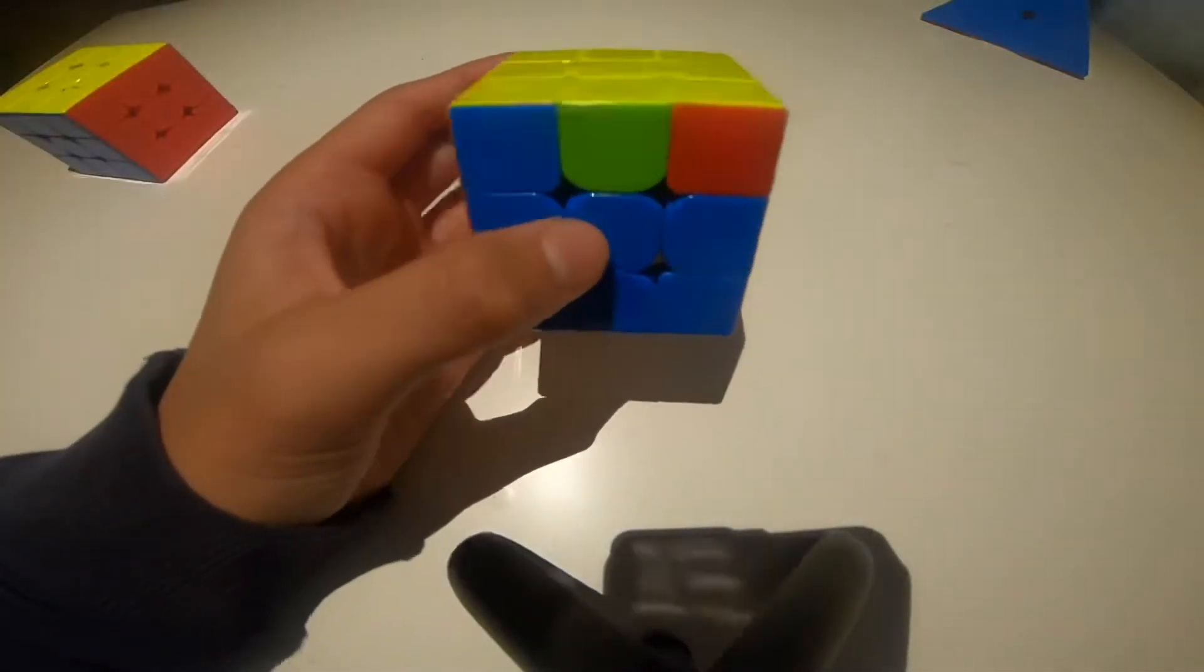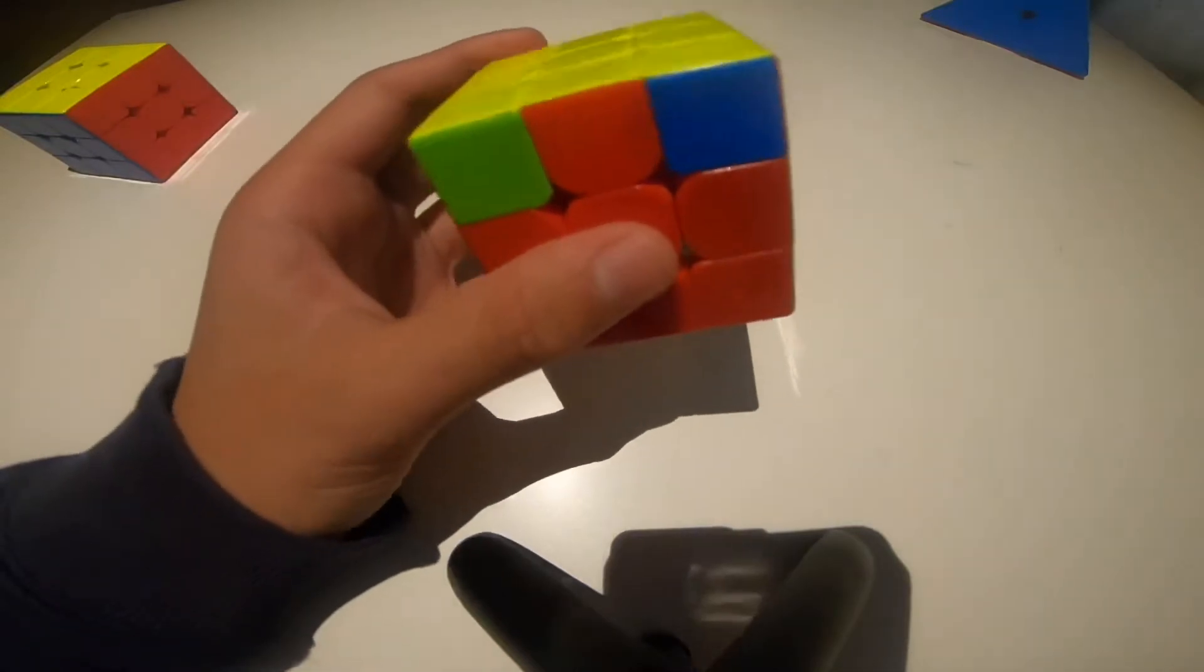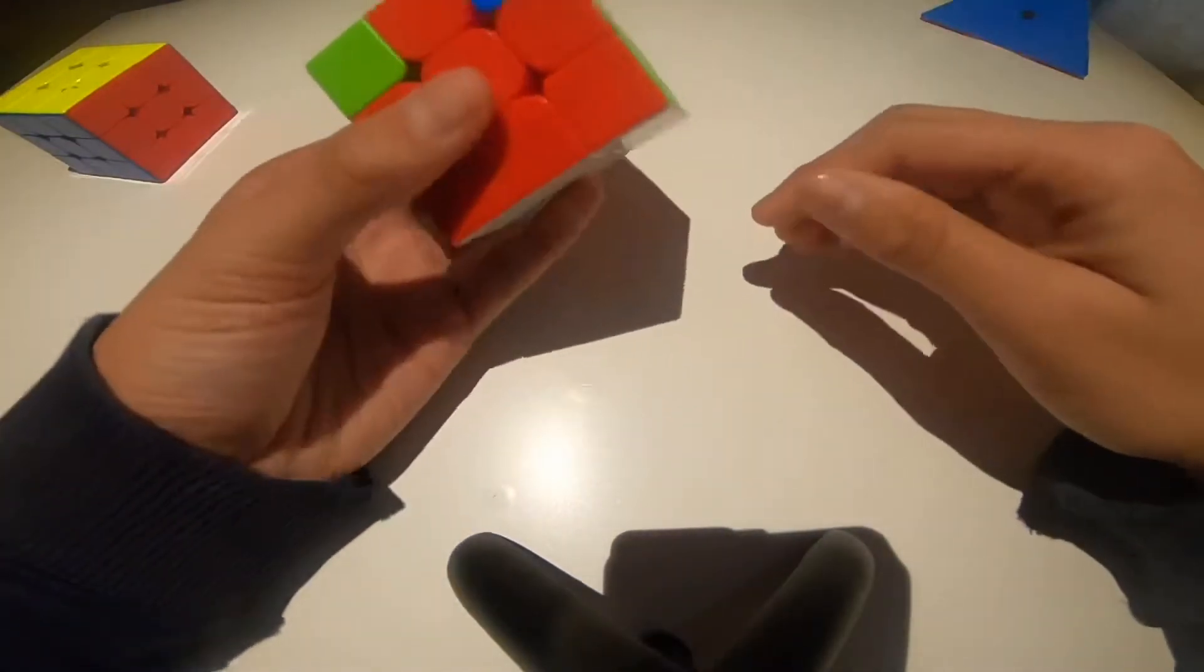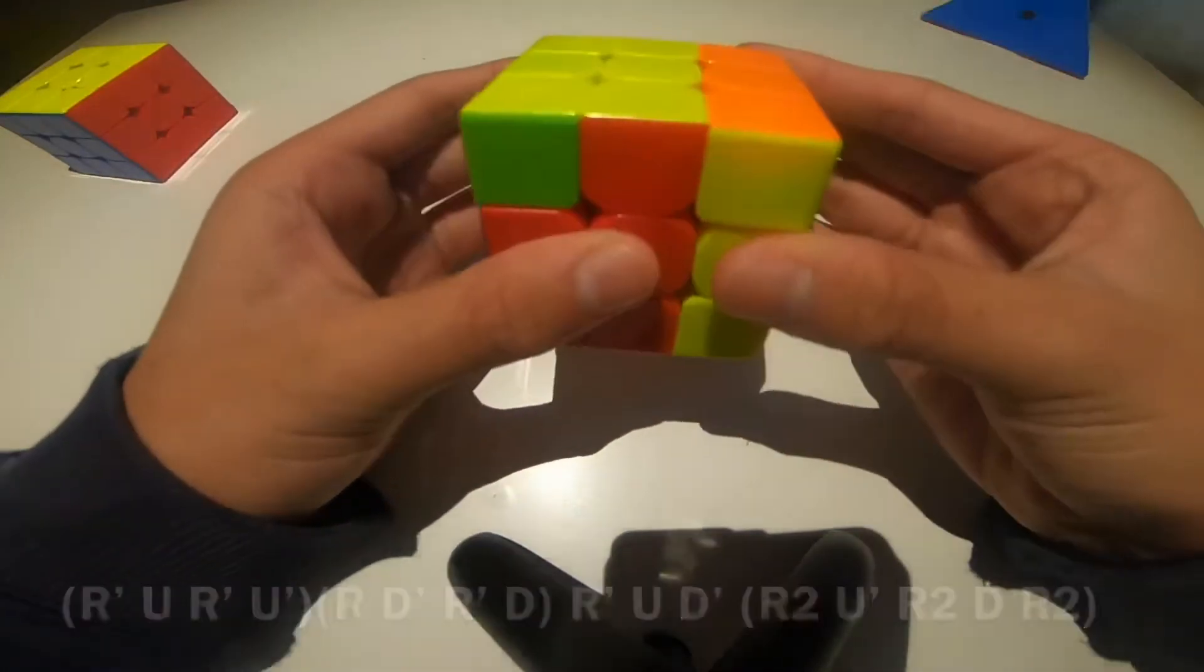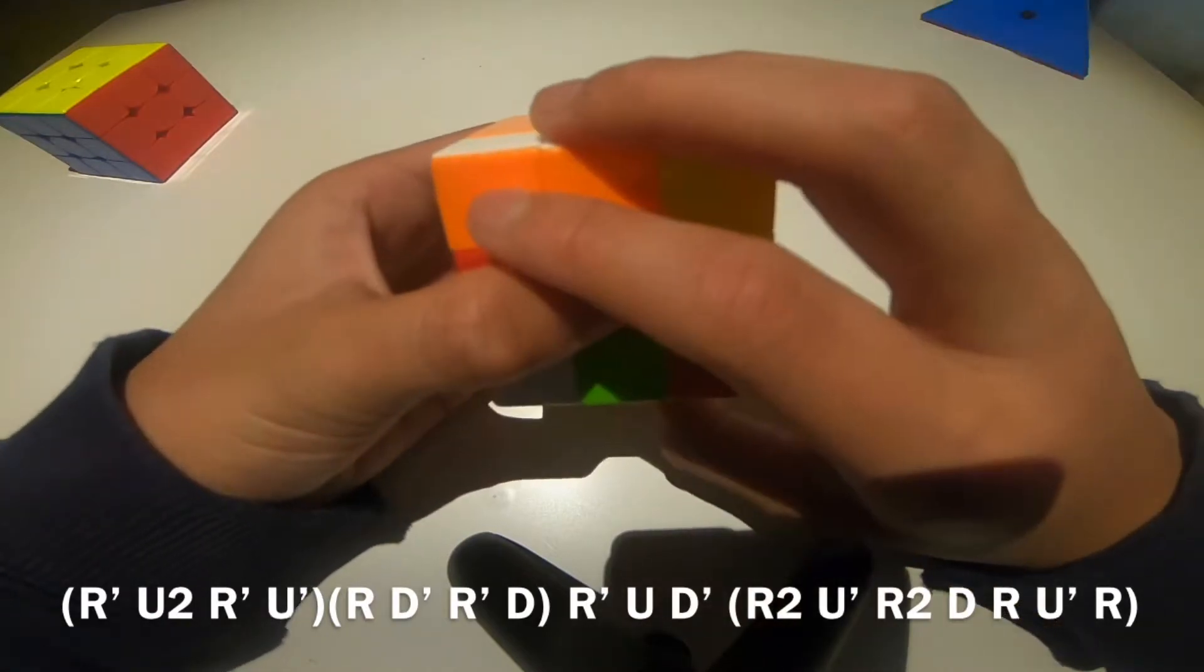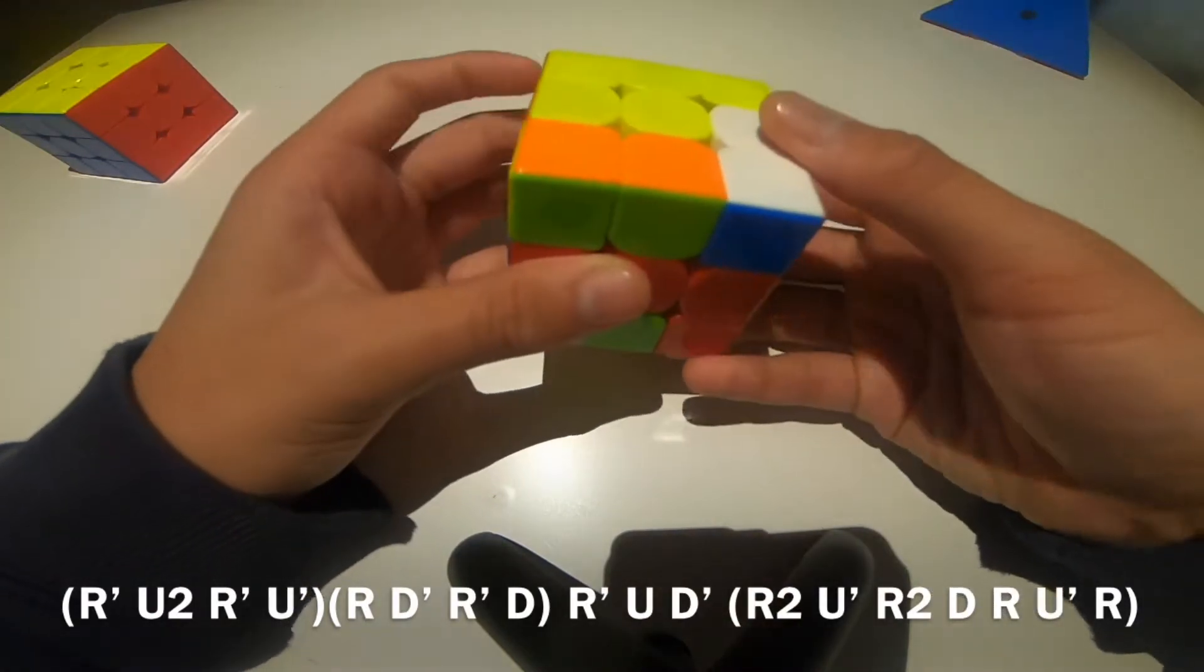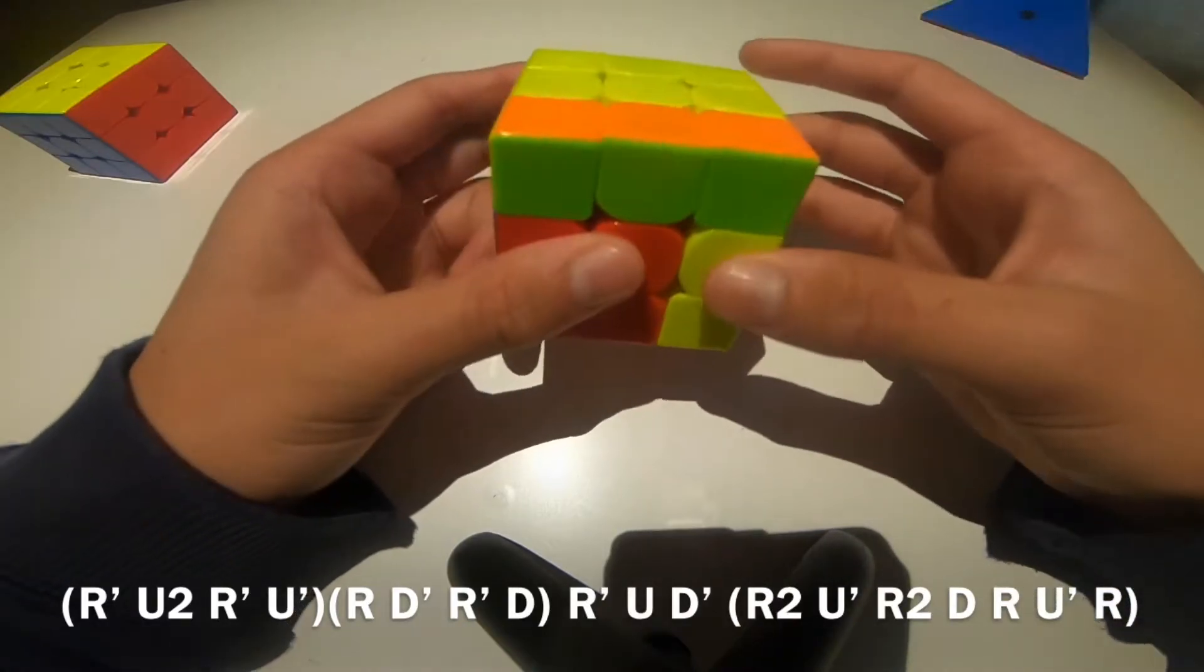And here's another F-perm that is pretty much the same thing, but with one slight twist. So instead of starting R' U R', you start with R' U2 R'. And then the same. And then when you get to here, instead of doing R2, you add a U' move here.